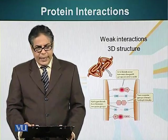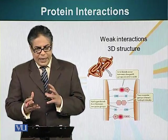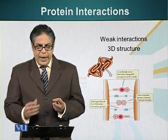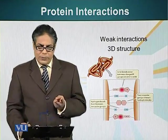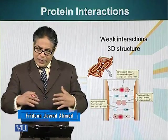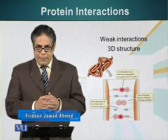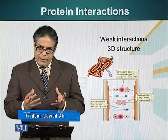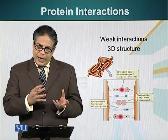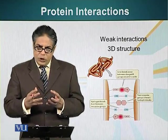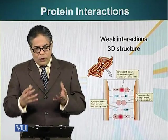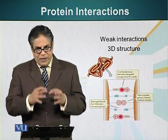Proteins carry information to interact with other molecules and other proteins in two forms: the shape of the protein, and the chemistry which is present on the surface of the protein. The shape of the protein is important because if it is to interact with another protein, the two shapes have to be mutually compatible — sort of like jigsaw puzzles fitting together.